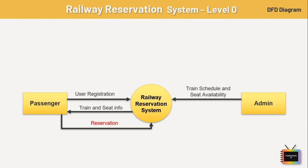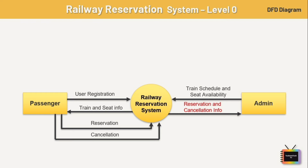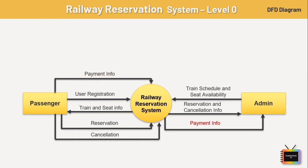Next we have reservation. After viewing train details and seat availability, the passenger initiates a reservation and can also cancel an initiated reservation. The railway management process will then send all reservation and cancellation information to admin. Last we have payment info — once payment is done by the passenger, it is stored in the railway management process and sent to admin.